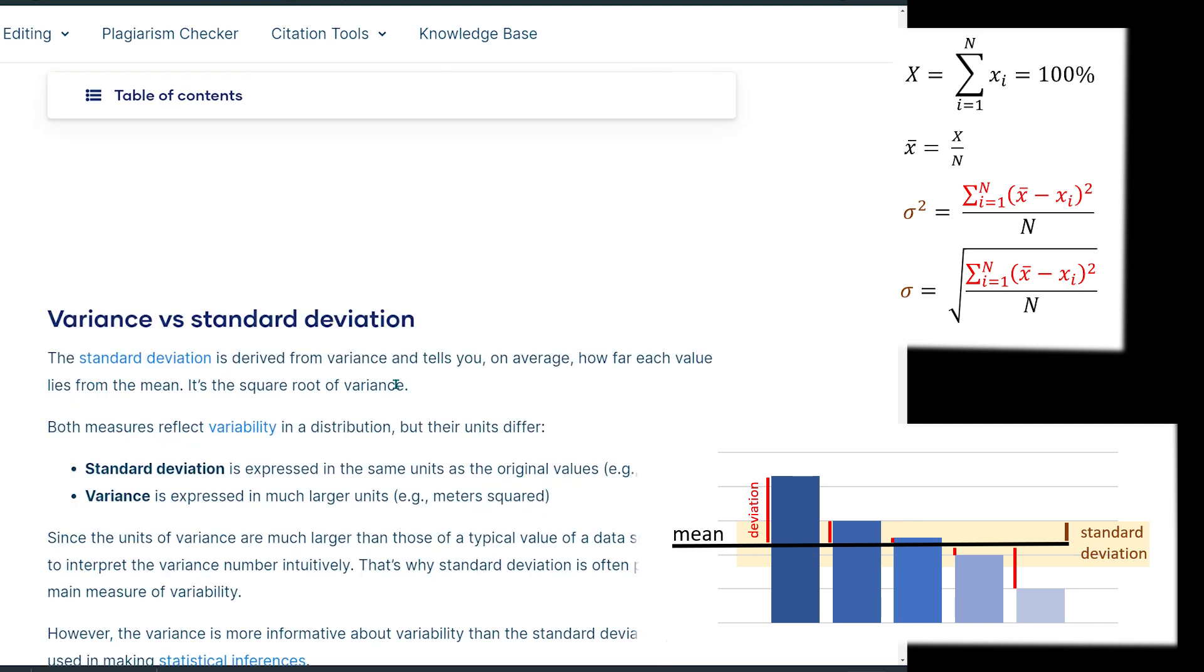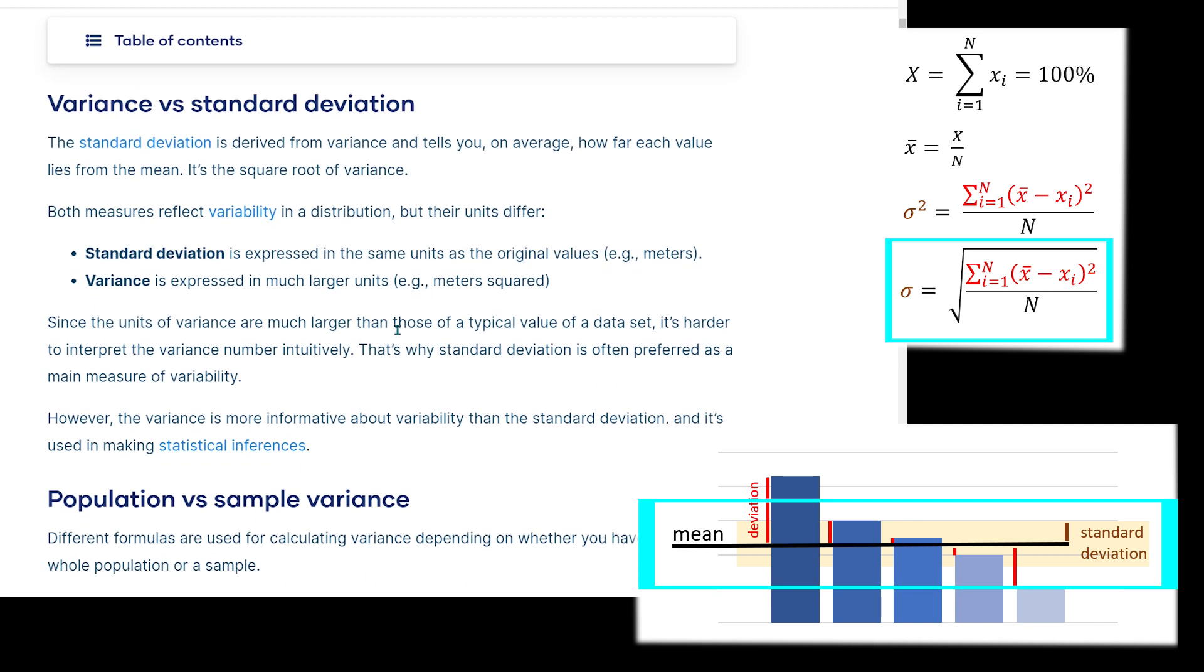While the standard deviation is derived from variance and tells you, on average, how far each value lies from the mean. It's the square root of variance. Both measures reflect variability in distribution, but their units differ. Standard deviation is expressed in the same units as the original values, while the variance is expressed in squared units.